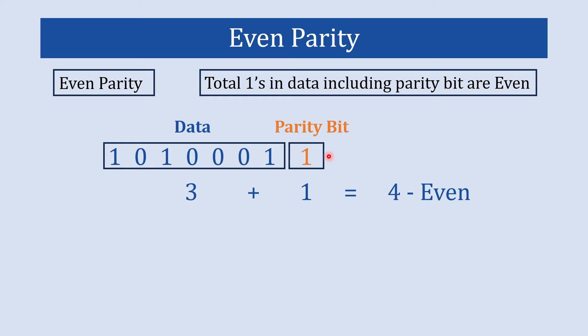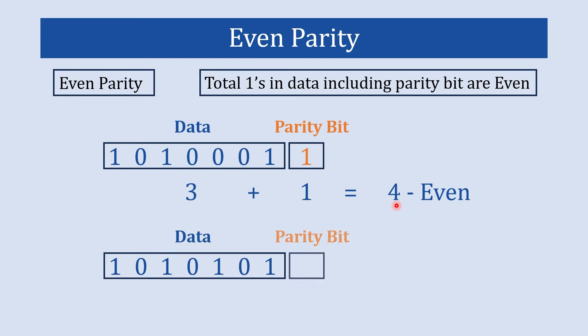So our entire data including the parity bit has an even number of ones, which makes it even parity. In another example, we have four ones in the data. If we place zero in the parity bit, four plus zero gives us four, which is an even number. So this is how we make even parity.